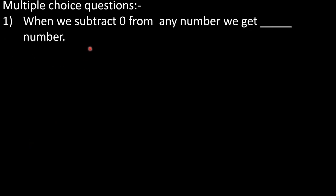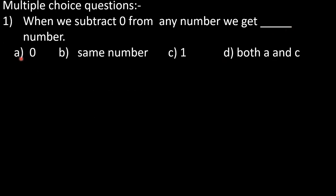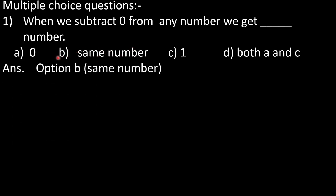Multiple choice question number 1: when we subtract 0 from any number, we get dash number. Options are A: 0, B: same number, C: 1, D: both A and C. In multiple choice questions we have 4 or more options and choose the correct answer. This is our property — we get the same number, so option B, same number, is correct.